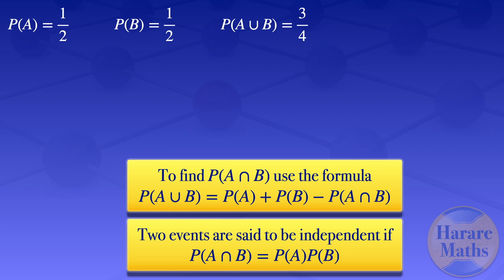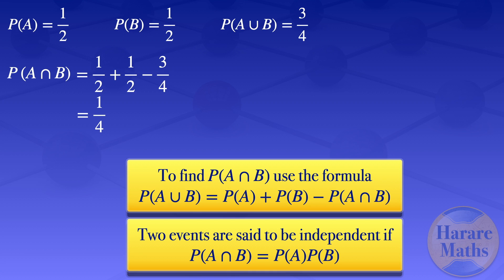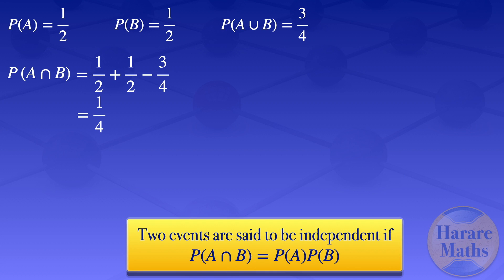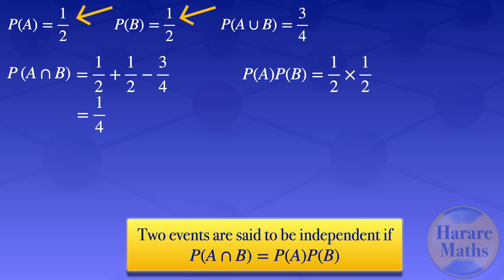Using the values given, the probability of A intersection B equals the probability of A plus the probability of B minus the probability of A union B, which gives us 1/2 plus 1/2 minus 3/4, and when we simplify that it gives us 1/4. And for the probability of A times the probability of B, using the values given, it will be 1/2 times 1/2, which gives us 1/4.